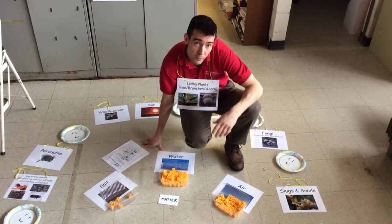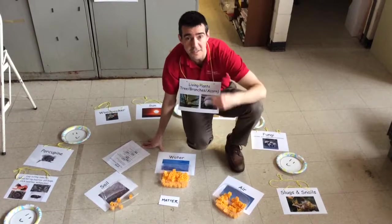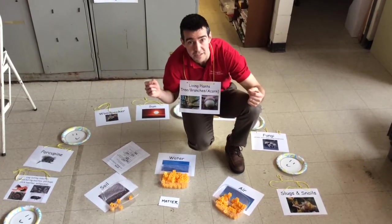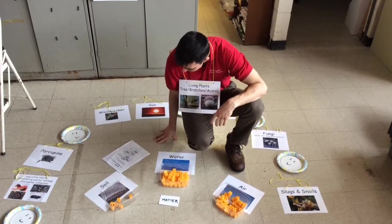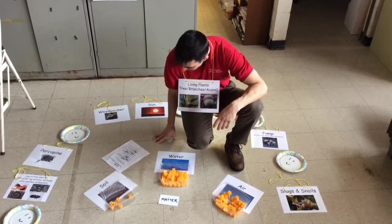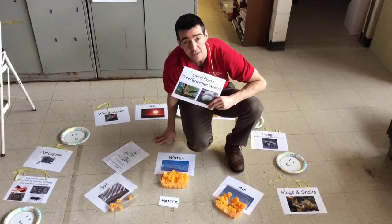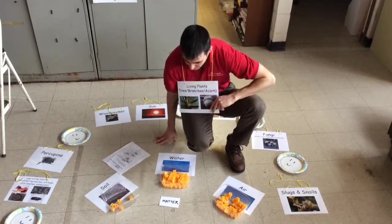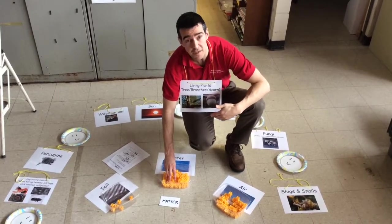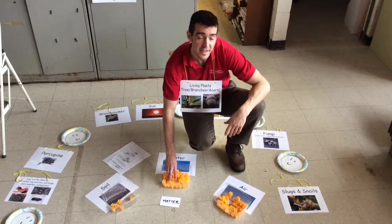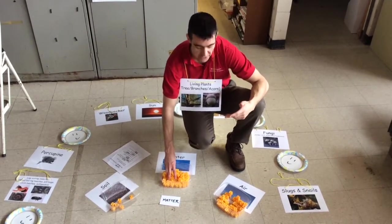We want to point out the difference here between using particles of matter versus the strings of energy from the yellow yarn we used in the previous lesson. When we talk about the forms of matter and how organisms use it, for living plants we're talking about photosynthesis and how the plant predominantly uses water and air to make its sugars.